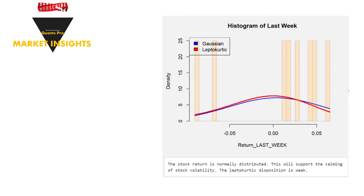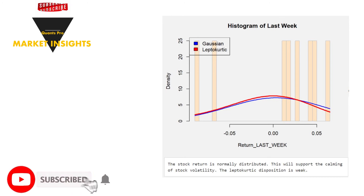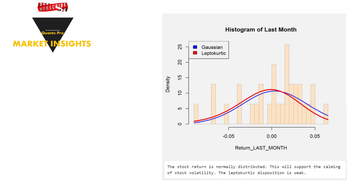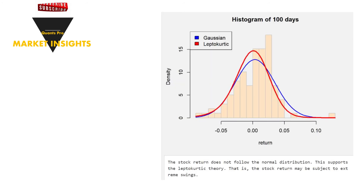The Gaussian and leptokurtic features of the distribution of the return on the share will be compared. Examining the probability distribution of the return, the stock has performed as shown in the chart over the past week, and it can be said that the returns behave more closely to the Gaussian curve. The last month's return distribution also reflects a dominant leptokurtic characteristic. In the last 100-day return, there is a serious leptokurtic feature in the scatter plot, and the existence of extreme and positive returns on the stock should not be overlooked.